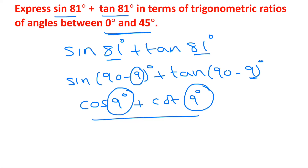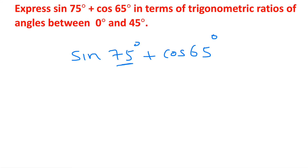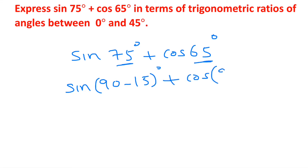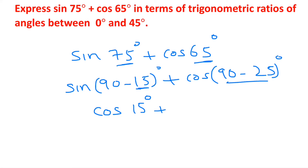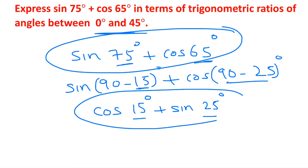Express sin 75 degrees plus cos 65 degrees in terms of trigonometric ratios of angles between 0 and 45 degrees. We write sin 75 as sin(90 minus 15) degrees, and cos 65 as cos(90 minus 25) degrees. Using sin(90 minus theta) equals cos theta, we get cos 15 degrees. Using cos(90 minus theta) equals sin theta, we get sin 25 degrees. Since 15 and 25 are between 0 and 45 degrees, sin 75 plus cos 65 equals cos 15 degrees plus sin 25 degrees.